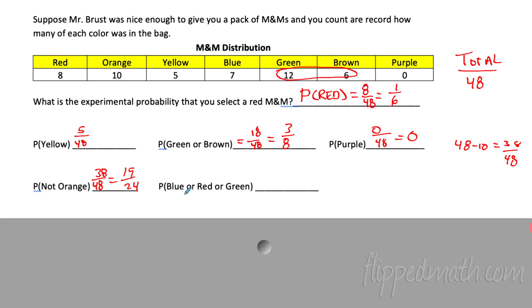And then lastly, blue or red or green. So blue or red, that's 15. 8 plus 7 is 15 or green, that's 27. So that'll be 27 out of 48, which I can take a three out. So I take a three and I'm going to get a nine out of 16.